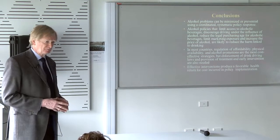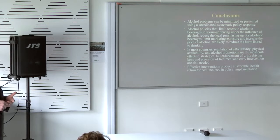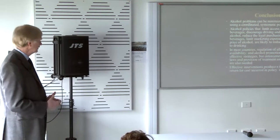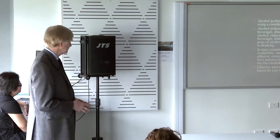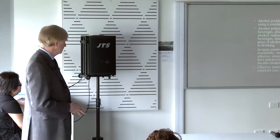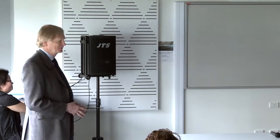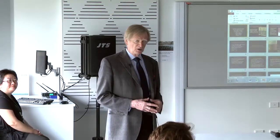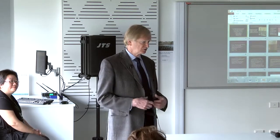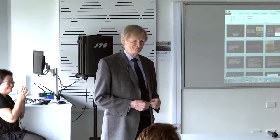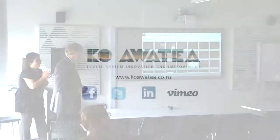Alcohol problems can be minimized and prevented using a coordinated approach. Measures that limit physical, economic, social, and psychological availability are the most effective. Regulating affordability, physical availability, and alcohol promotion are probably the best buys. Thank you — that is the story of where the World Health Organization is going through its global strategy: trying to get governments to adopt more rational, reasonable policies to control alcohol-related problems.